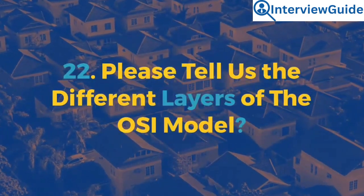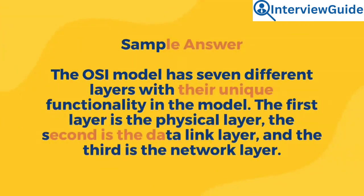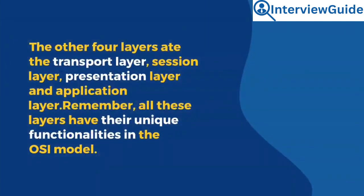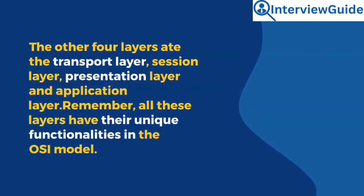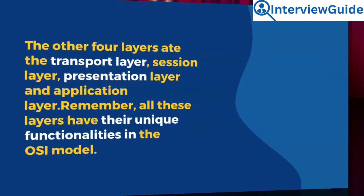Question 22: Please tell us the different layers of the OSI model. The OSI model has seven different layers, each with unique functionality. The first layer is the physical layer, the second is the data link layer, and the third is the network layer. The other four layers are the transport layer, session layer, presentation layer, and application layer. Remember, all these layers have their unique functionalities in the OSI model.